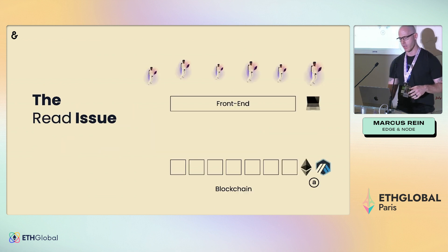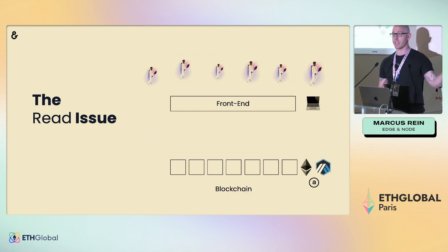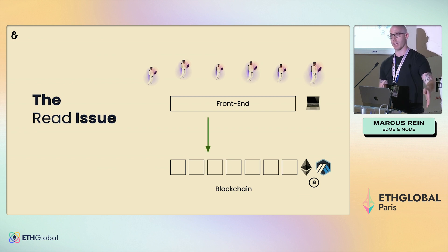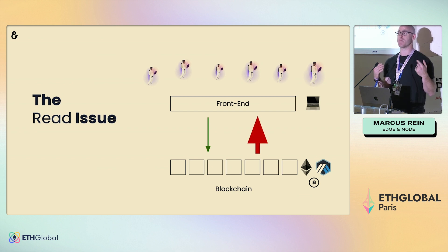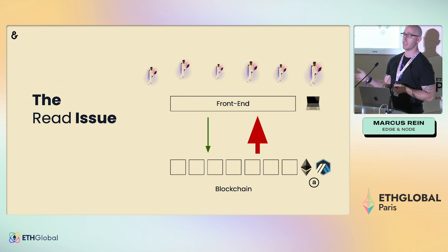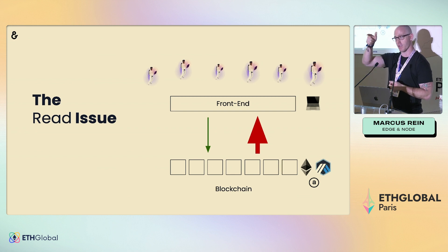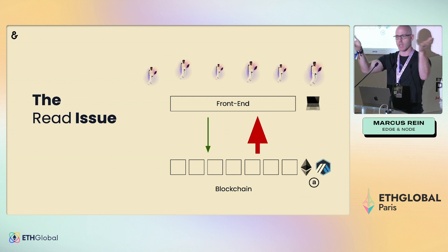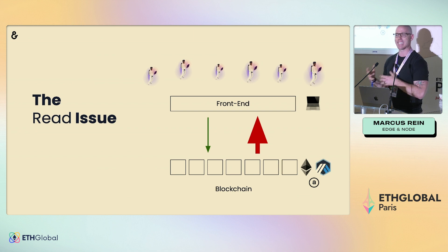We have so much data being piped in every second with no organization — it needs indexing. There's also a read issue with the blockchain: disorganization on the way in and a lot coming back out. For example, one post on Twitter but potentially a thousand followers reading it — that's a 1000-to-1 read ratio — the exact same thing we see with data retrieval from the blockchain.